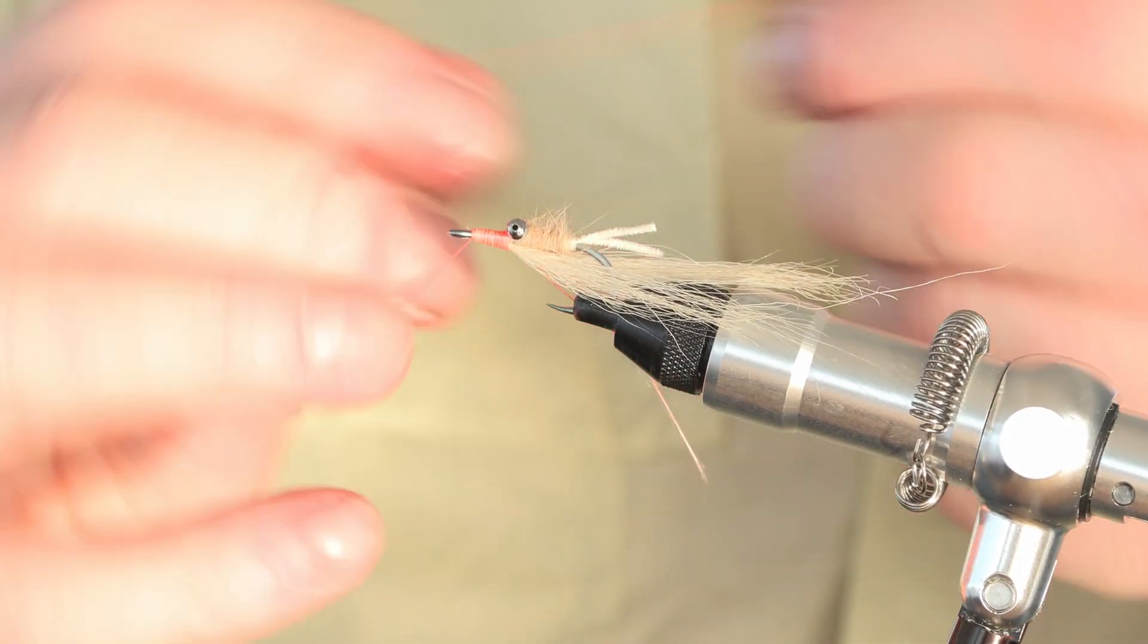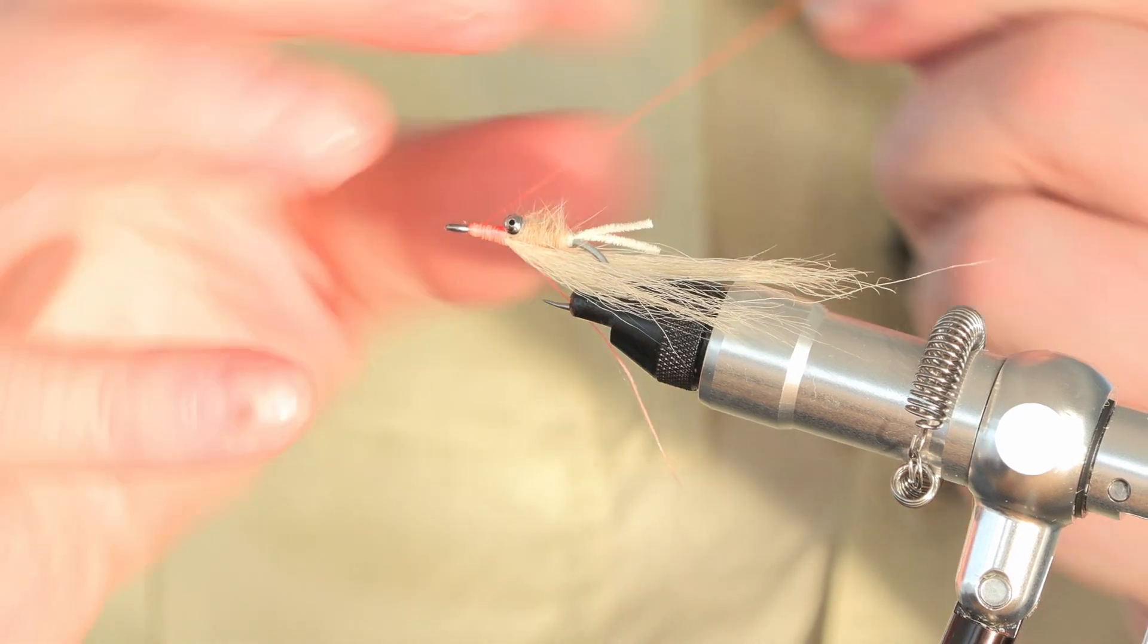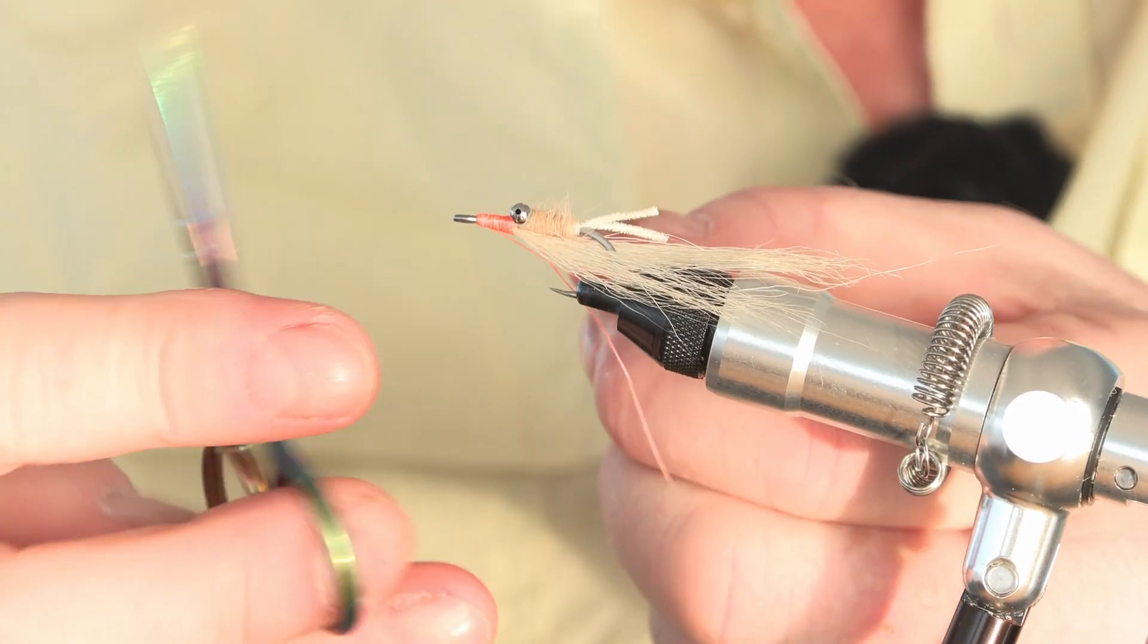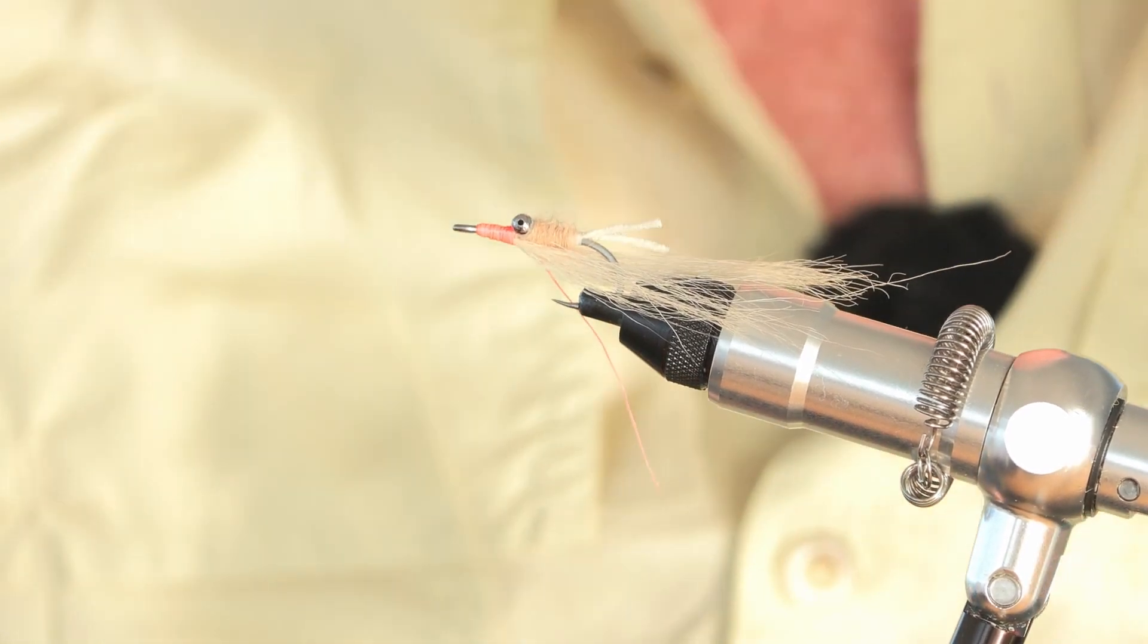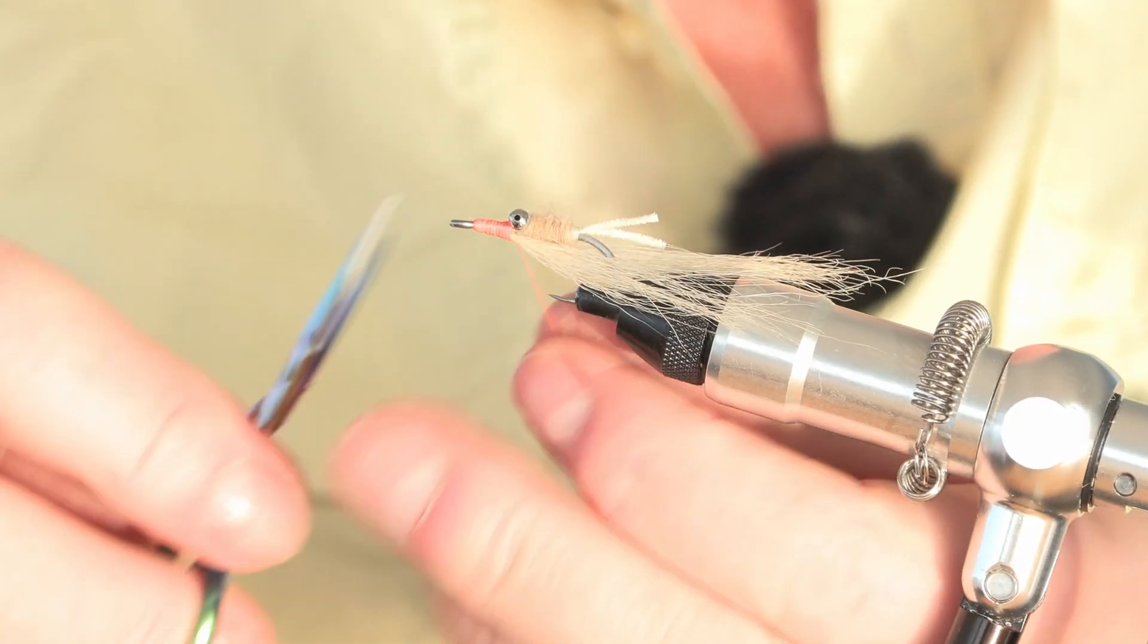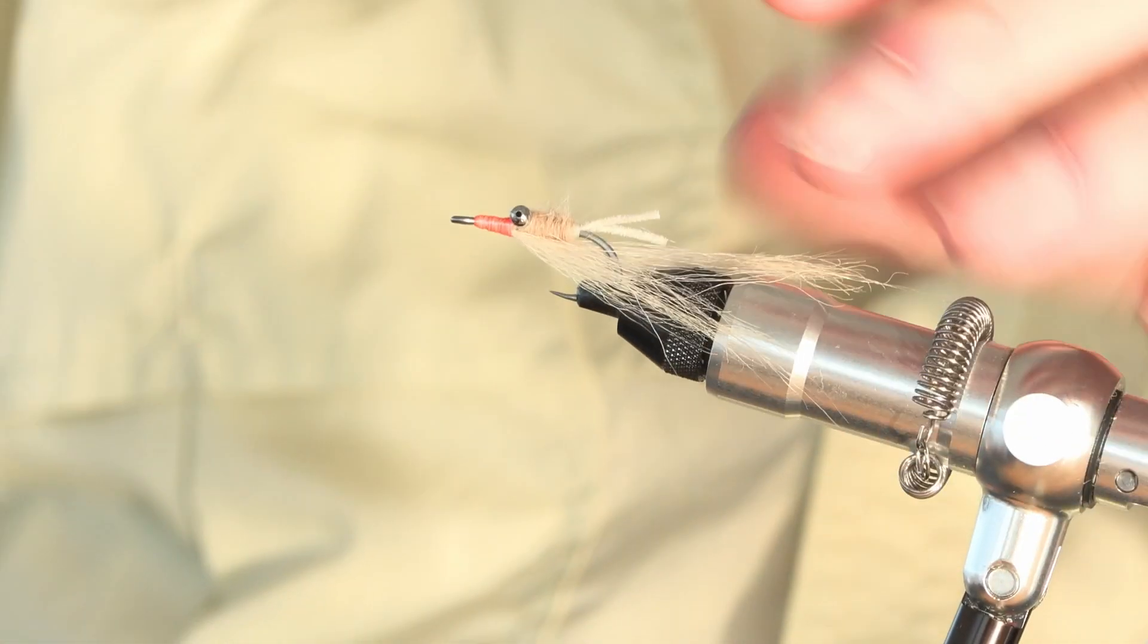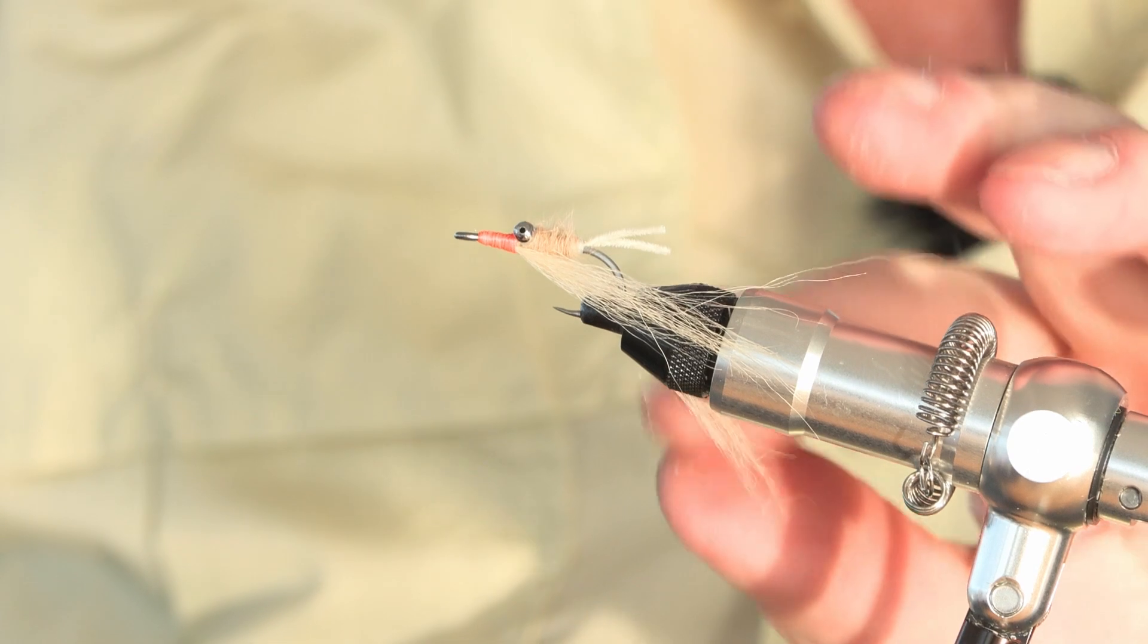And there we have it, a very, very simple fly to tie, yet so effective. Now I said earlier I'm going to deal with the eyes, which I will do now. They're nearly finished. They want to be just a little bit shorter than that.